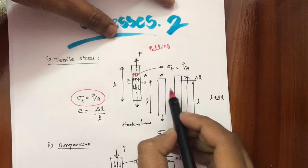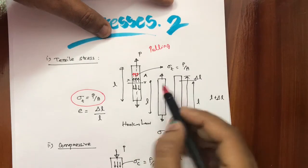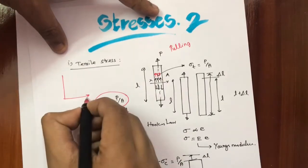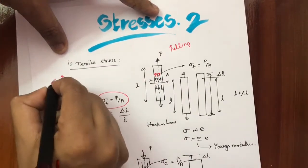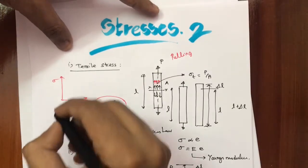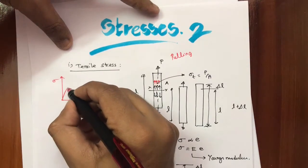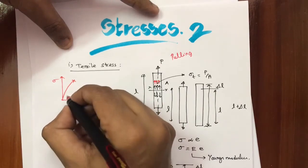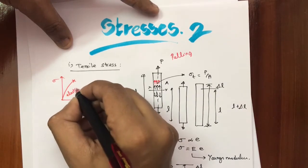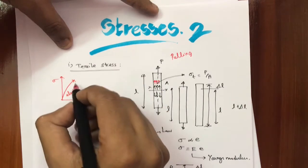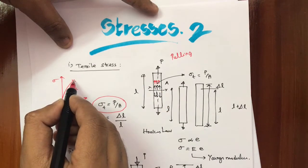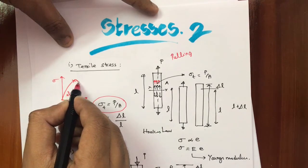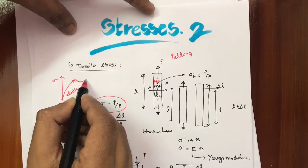When we apply the load and it exceeds the yield value — yield is very simple. Let's draw the stress-strain curve, with strain ε on one axis and stress σ on the other. When the stress increases up to a certain point, the material is in the elastic region. If we increase the load further, some deviation will occur and the material comes under the plastic region.